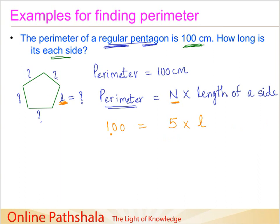Now we have this. What I can do is I can divide both of these sides by 5. So this 5 cancels out here and this gives me 20 equals L, or the length of side is equal to 20 cm.